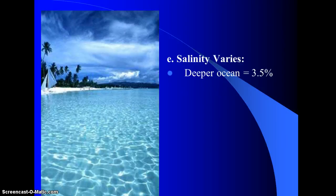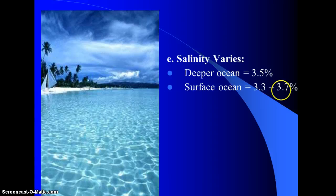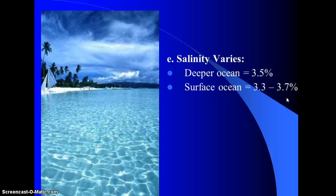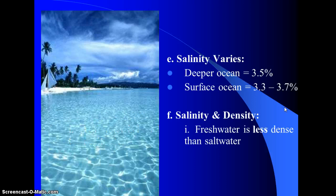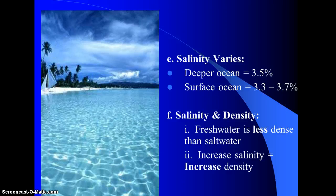Salinity varies around the ocean and also with depth. The deeper ocean maintains about 3.5%, but the surface ranges from 3.3 to 3.7% — you need to know these percentages. The surface has a range because all the action — evaporation, precipitation, river input — happens there. Fresh water is less dense than salt water, so precipitation and river input stay on top until thoroughly mixed, potentially disrupting existing current patterns.